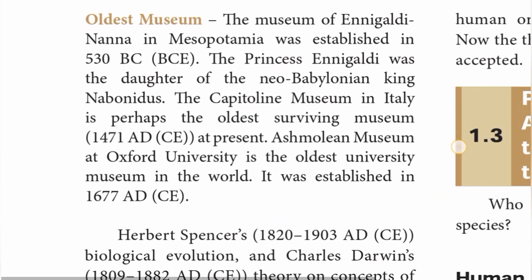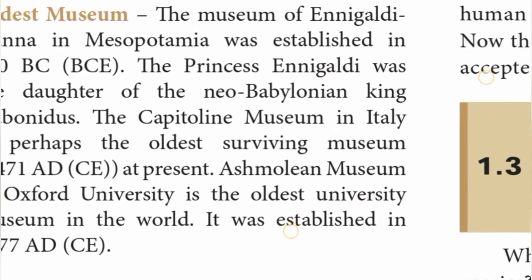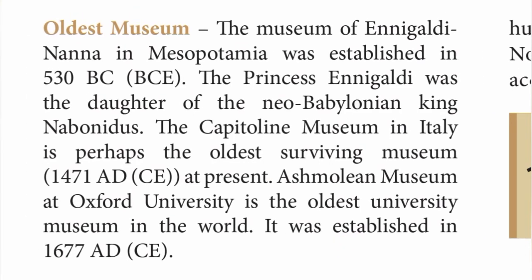The museum of Enigaldi Nanna in Mesopotamia was established in 530 BC. Princess Enigaldi was the daughter of the Neo-Babylonian king Nabonidas. The Capitol Museum in Italy is perhaps the oldest surviving museum at present. The Ashmolean Museum at Oxford University is the oldest university museum in the world, established in 1677 AD.